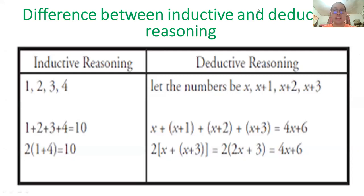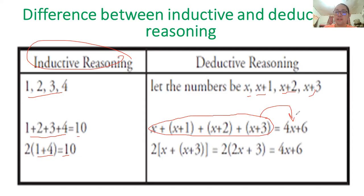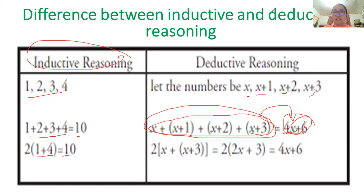Here is the difference between inductive and deductive reasoning using an example. With inductive reasoning: given 1, 2, 3, 4 — compute 1 + 2 + 3 + 4 = 2 × (1 + 4) = 2 × 5 = 10. With deductive reasoning: let the numbers be x, x+1, x+2, x+3 — their sum is 4x + 6, which is the general expression. Inductive reasoning works from specific cases; deductive reasoning works from a general formula.